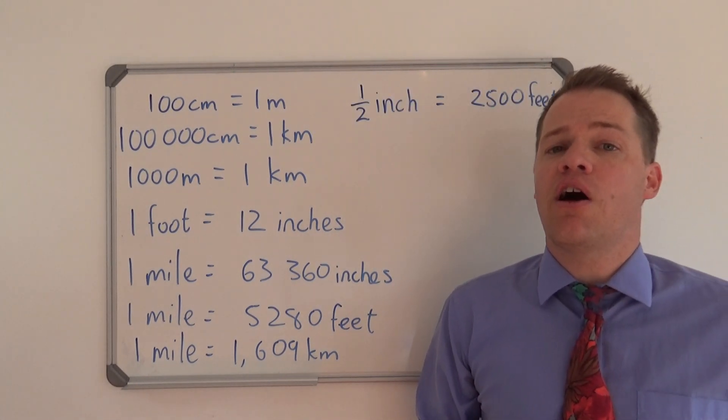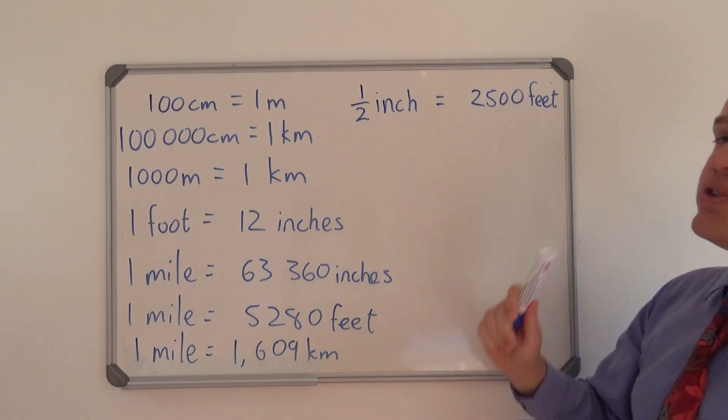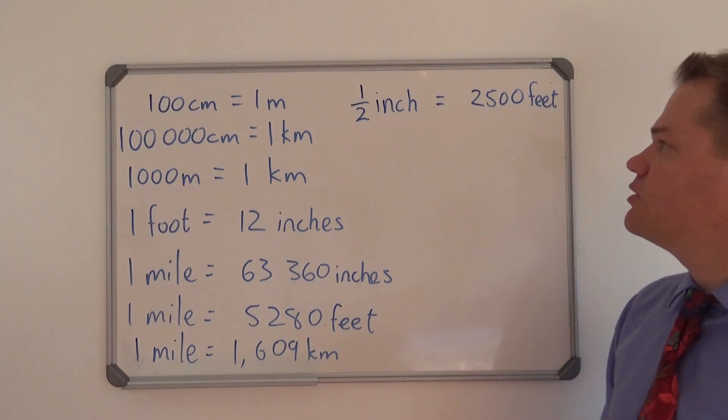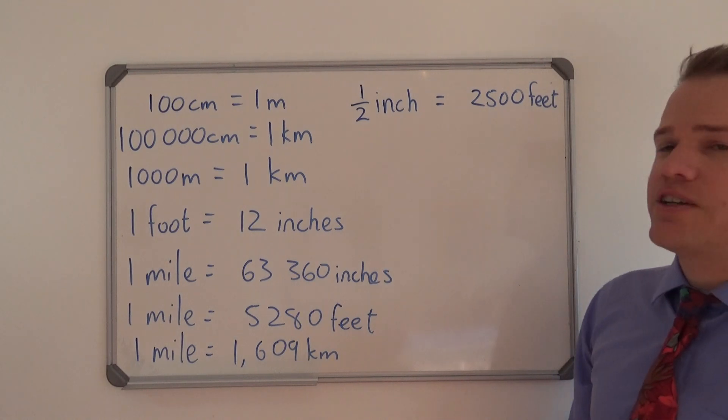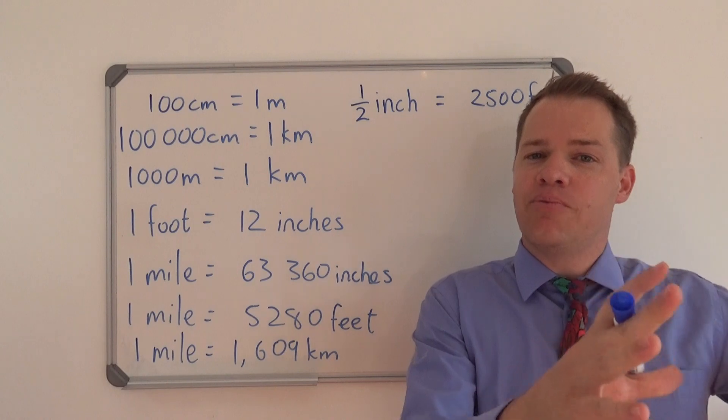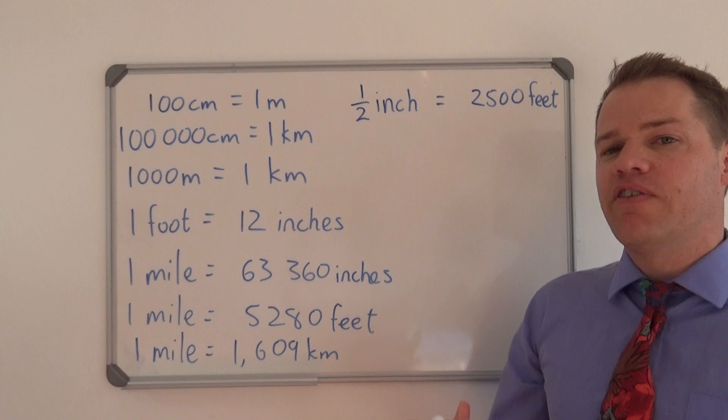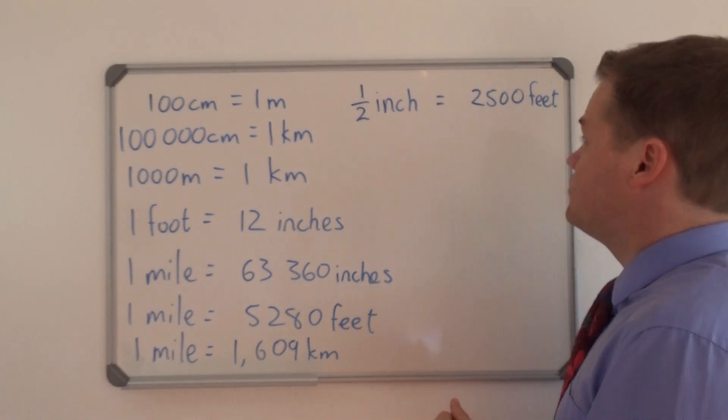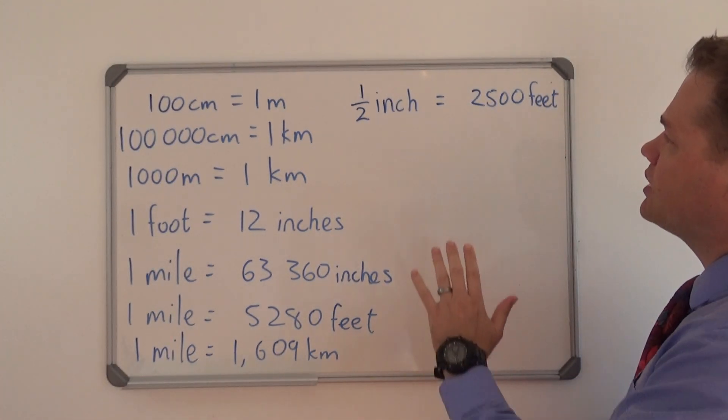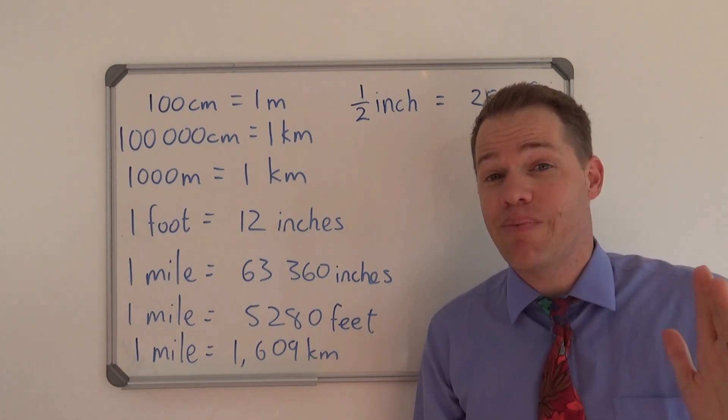So one of my viewers asked me to convert this scale. Half an inch equals 2,500 feet. Now this is actually quite simple. Initially when you see the numbers, it's always intimidating. But it's important to remind yourself of a few concepts. Now firstly, what did I say? We want to compare apples with apples, but we are actually going to skip that step.